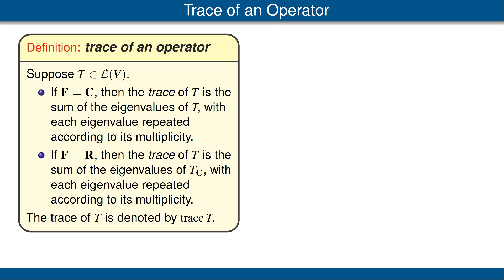For the case where V is a real vector space, the trace of T is defined to be the sum of the eigenvalues of the complexification of T, with each eigenvalue repeated according to its multiplicity. Alternatively, you could define the trace of T to be the trace of the complexification of T.